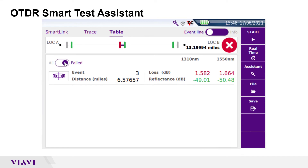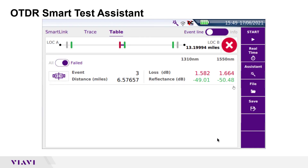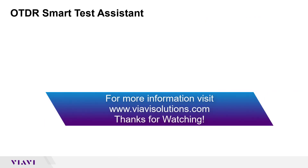If you wish to save a report, tap the save soft key and enter recording information. Job ID determines the folder into which results are saved. Cable ID, fiber ID, and fiber number determine the file name. Locations and comments are also included in the report header. Tap File and PDF to save the report, then tap Assistant to test your next fiber.